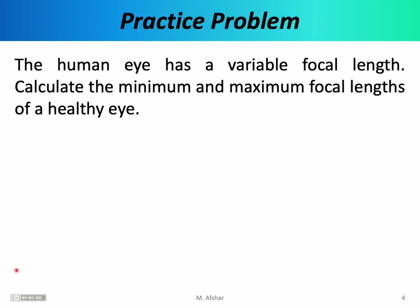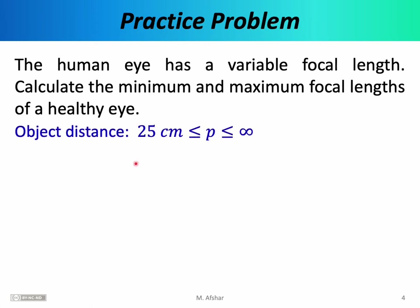Before going any further, let's do a simple practice problem. The human eye has a variable focal length — recall that this is referred to as accommodation. The ciliary muscles connected to the lens can contract and relax, thereby changing the shape of the eye and thus changing its focal length. In this problem, we want to calculate the minimum and maximum focal lengths possible for a healthy eye. A healthy eye needs to focus on objects anywhere between 25 centimeters and infinity.